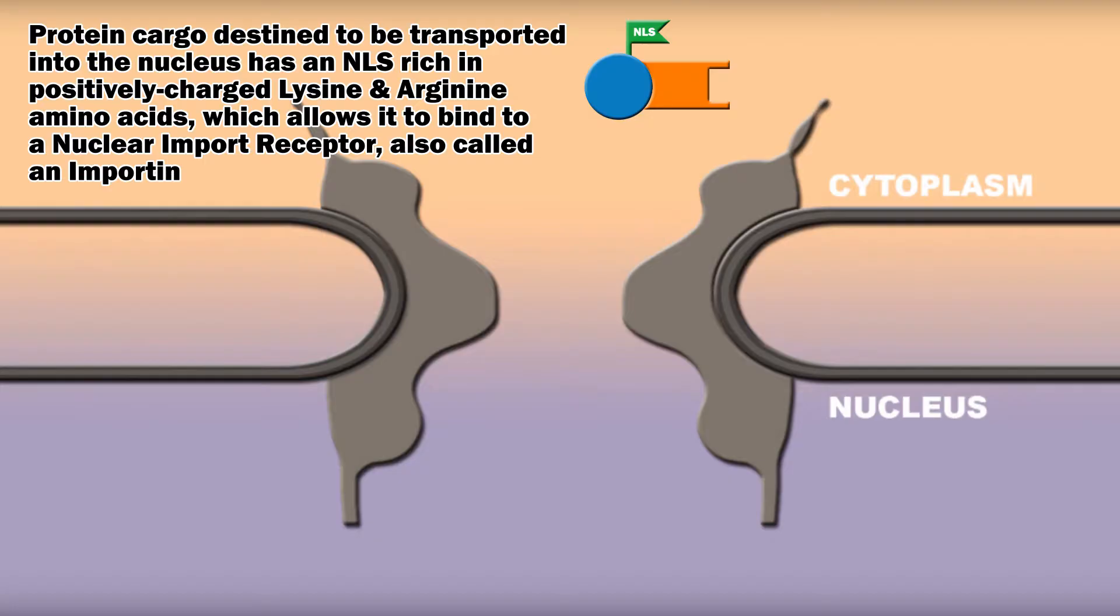Different cargo proteins can have different nuclear localization signals and can therefore bind different importins. An adapter is sometimes necessary to help the importin bind the cargo.